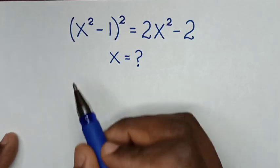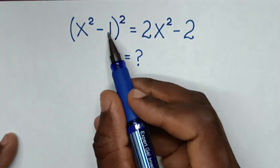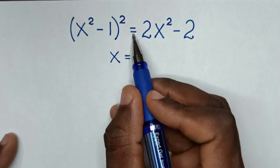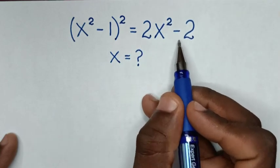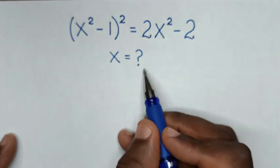Hello. How to solve (x² - 1)² = 2x² - 2, to find the values of x from this equation.